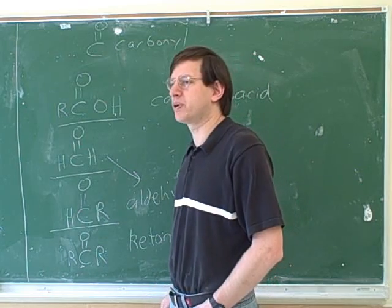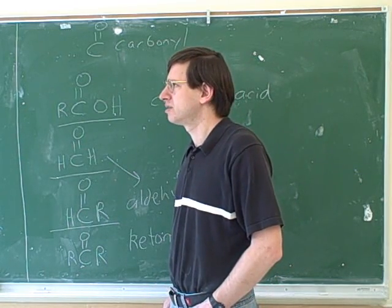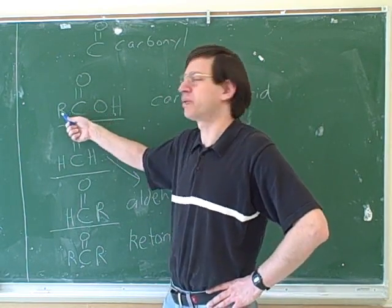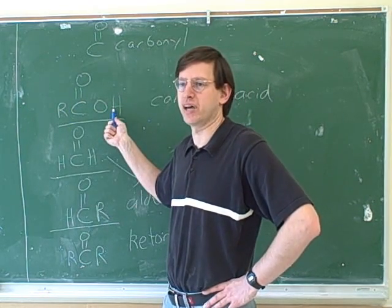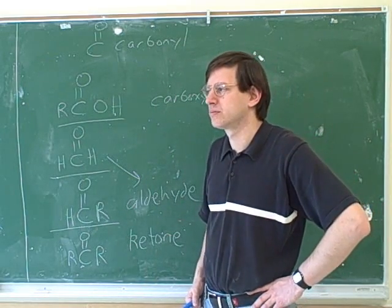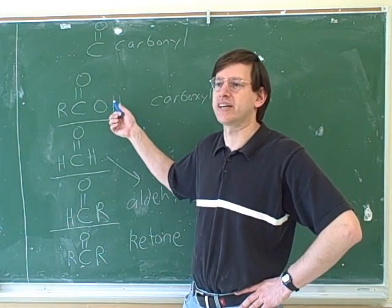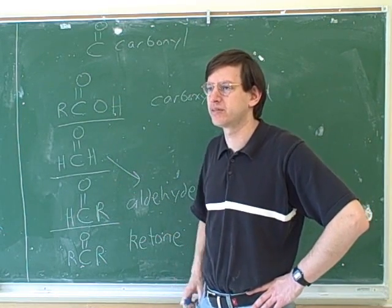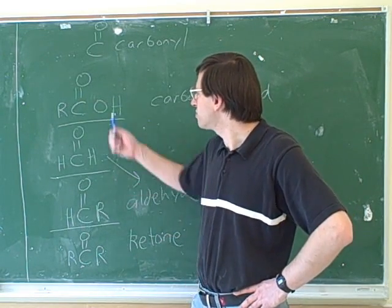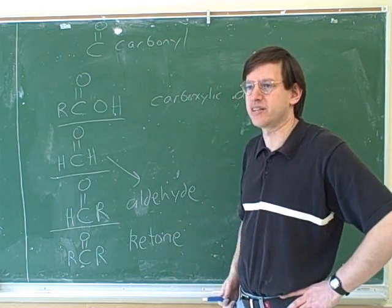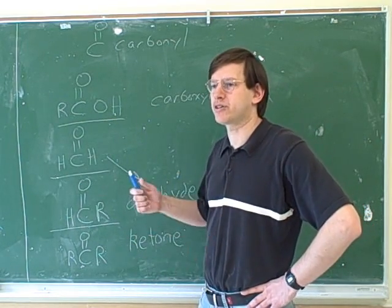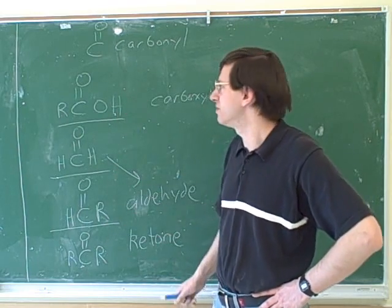What do acids do? They give protons. In a carboxylic acid, the acidic proton is the one on the oxygen — not any proton on the carbons. Carboxylic acids are not strong acids; they only partially deprotonate, unlike a strong acid like hydrochloric acid.